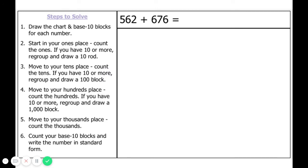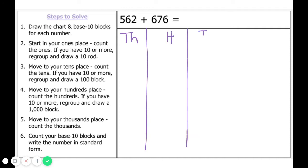Let's look at our first equation. We have 562 plus 676. Our first step is to draw the chart and base ten blocks for each number. I notice that we have the hundreds, tens, and ones. But sometimes when we add we need to do some regrouping, so we are also going to draw the thousands in our chart. We are going to start by labeling our thousands, hundreds, tens, and ones.